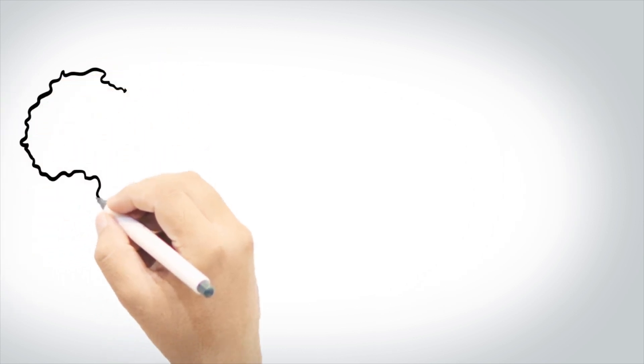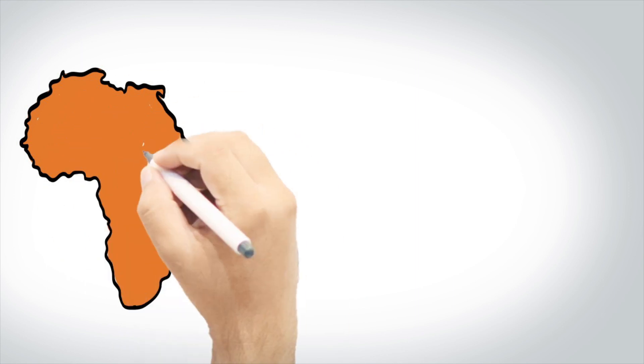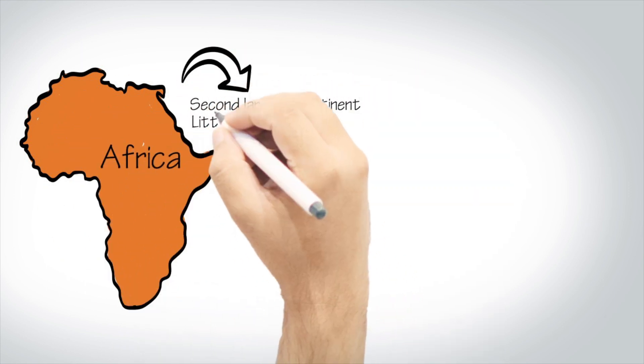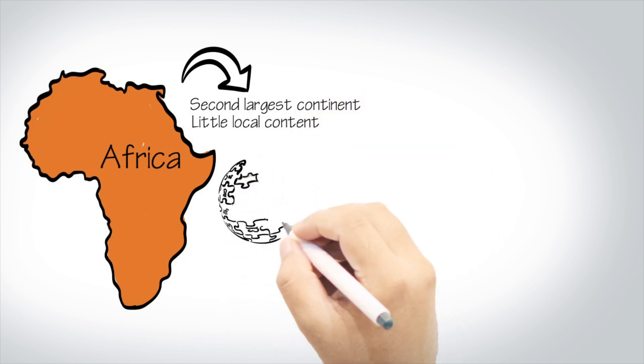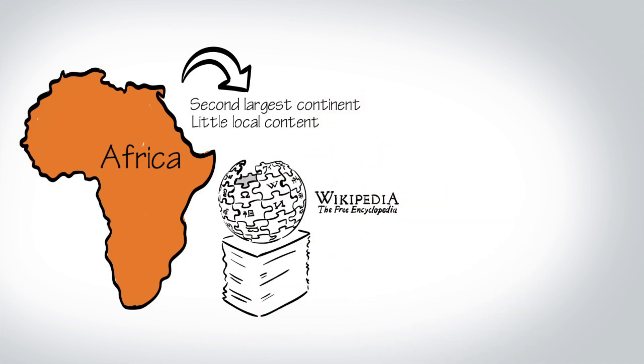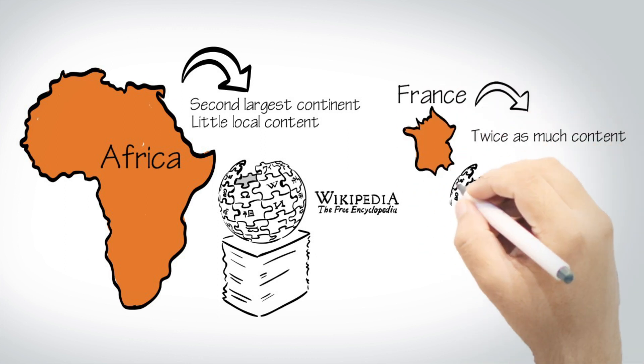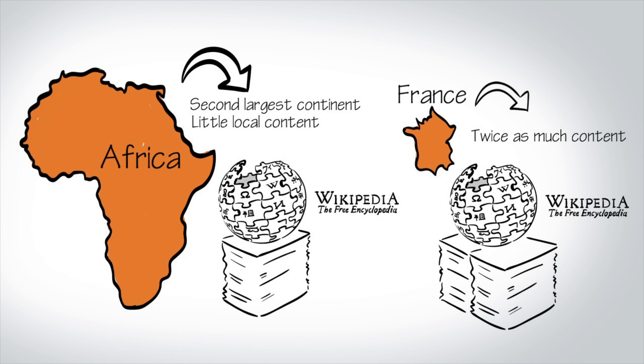Despite being the second-largest continent, the amount of African-themed content available on the internet pales in comparison to the amount of information available for other continents or countries. As a matter of fact, there's about twice as much content available for France on Wikipedia than for all 54 countries of Africa combined.